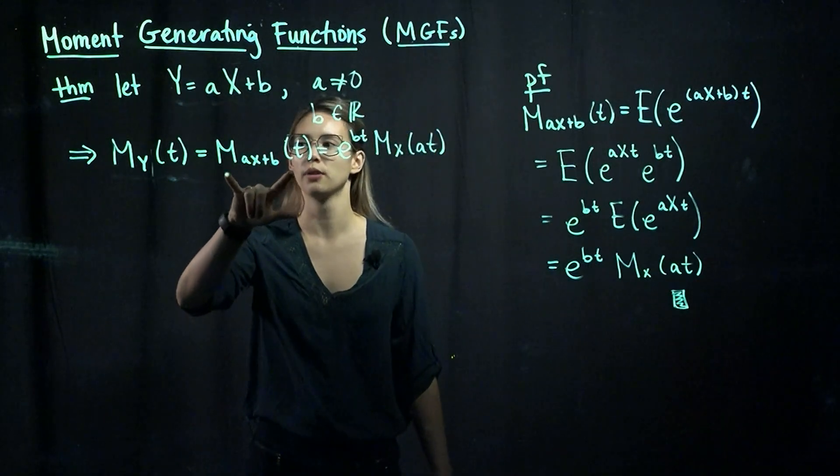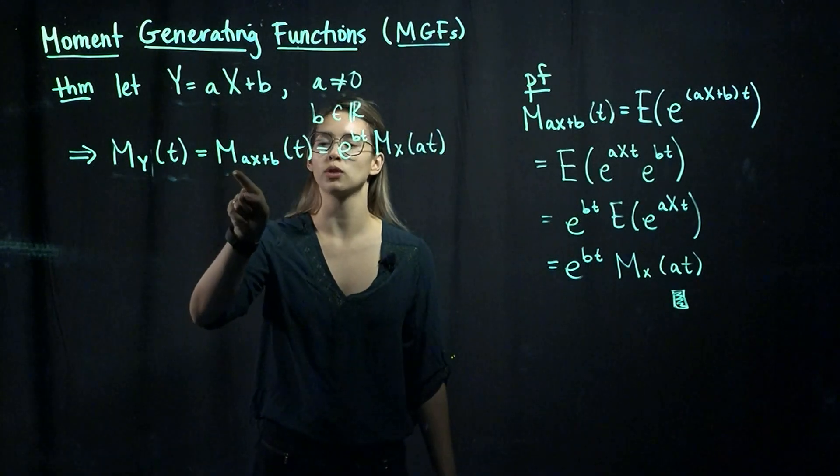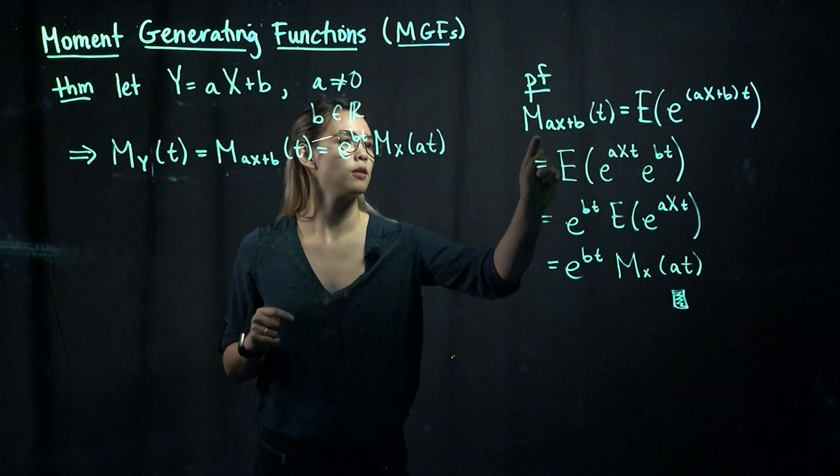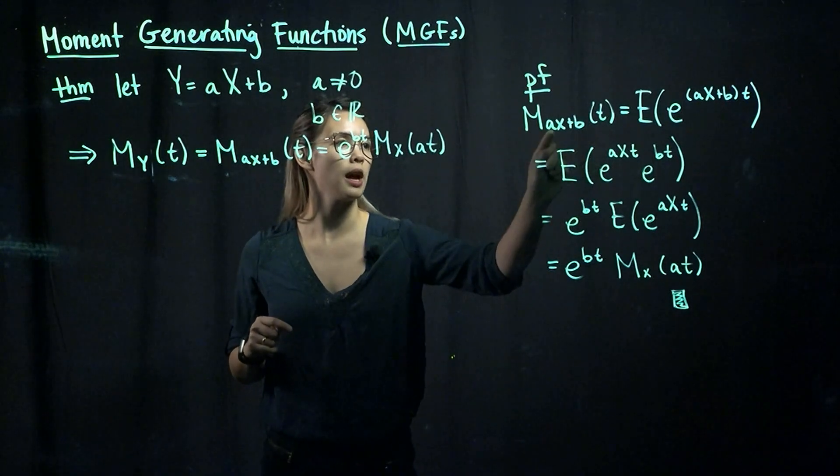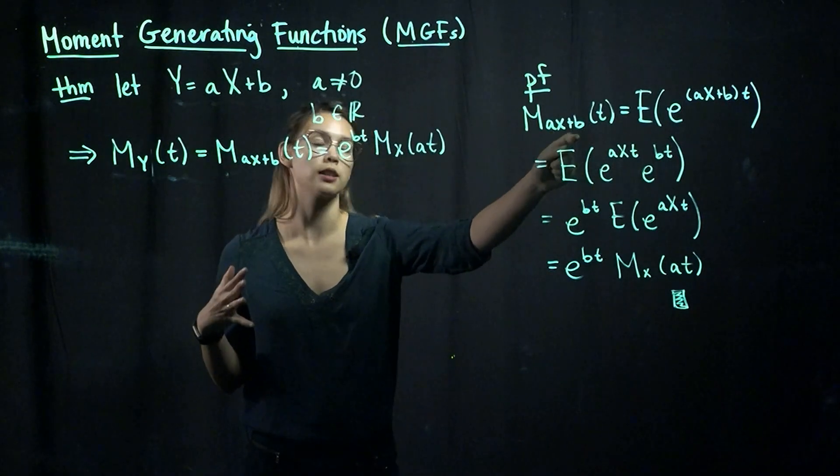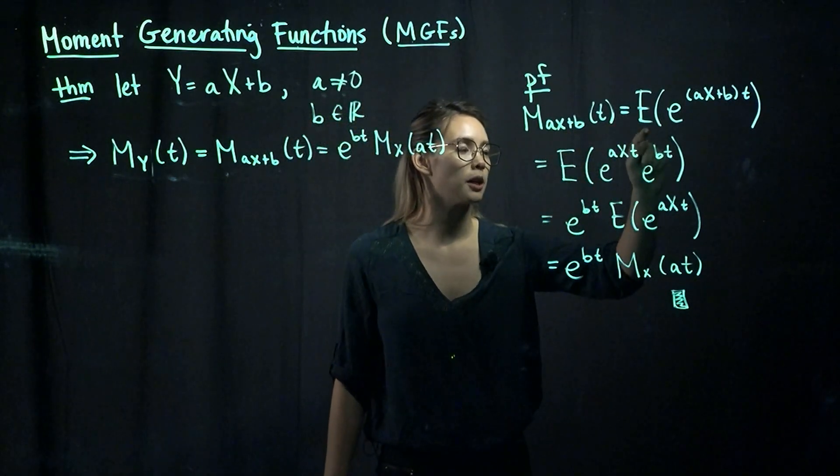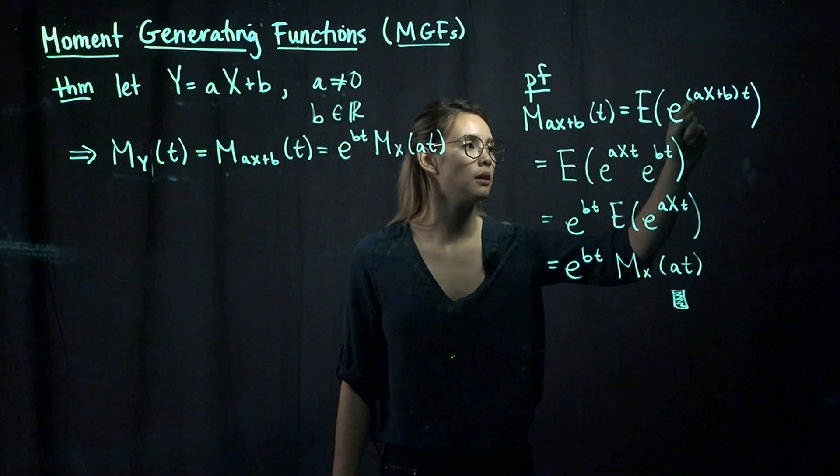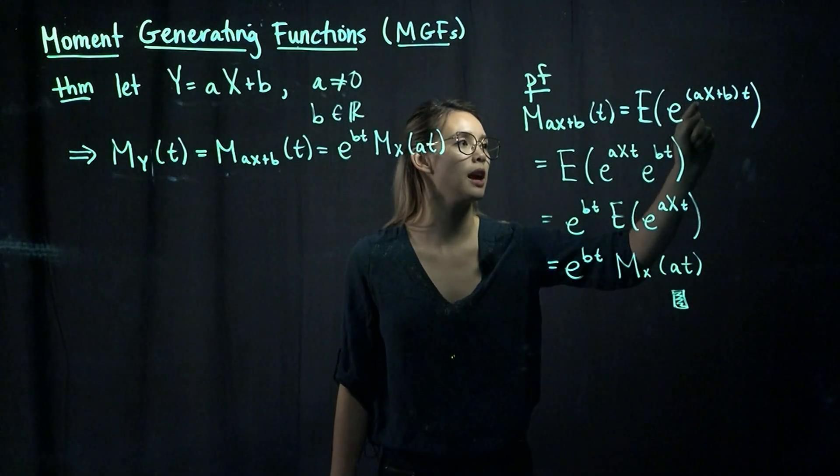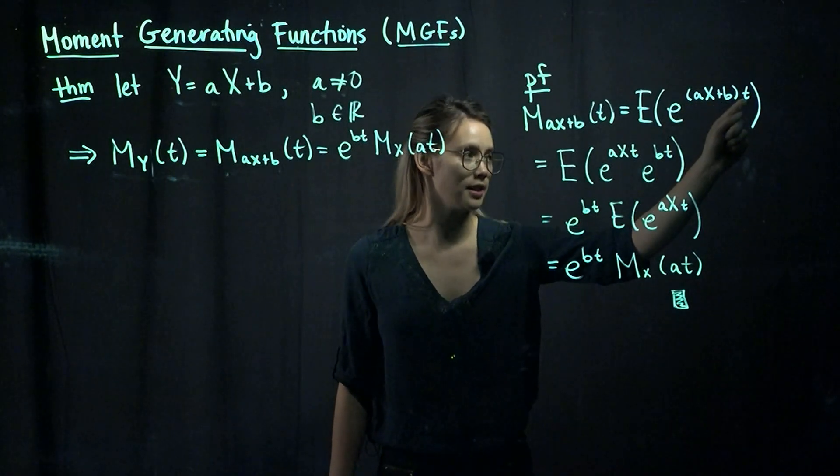So let's just start off. We know that y is equal to ax plus b, so let's start with the moment-generating function for ax plus b, just using our definition of mgf. So that gives us the expected value of e to the, we put our random variable in here, ax plus b, and then times t.